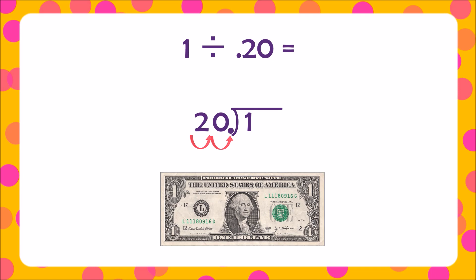But now we need to compensate by doing the exact same thing to our other number, the dividend. Since one — our dividend — is a whole number, this is where the decimal would normally fall. We need to shift this decimal two times to the right: one, two. Now this problem seems easier: 100 divided by 20. I think I can even do that mentally — that's five! Hey, that's the same answer we got when we divided one by 20 hundredths.